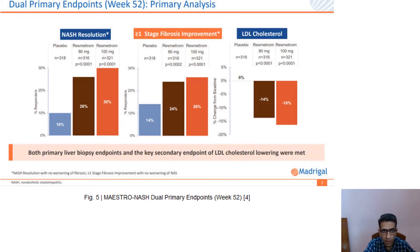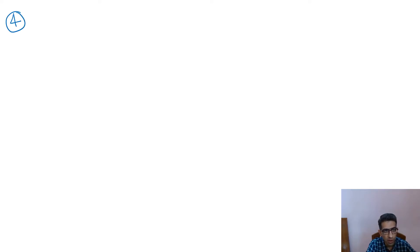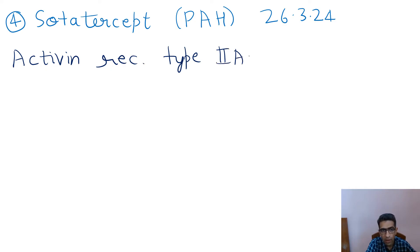Sotatercept, indicated for pulmonary arterial hypertension, approved 26th of March 2024. This is a first-in-class activin receptor type 2A-Fc fusion protein designed for the treatment of pulmonary arterial hypertension.